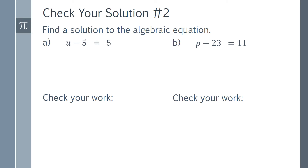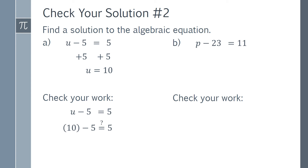Remember that in order to find a solution to the algebraic equation, we need to get the variable by itself on one side of the equation. We can use inverse operations to help us with this. So for Part a, we will add 5 to both sides. This leaves us with u equals 10. Now we need to check our work. Start with the original equation and substitute 10 in for u. 10 minus 5 equals 5, so our solution is correct.